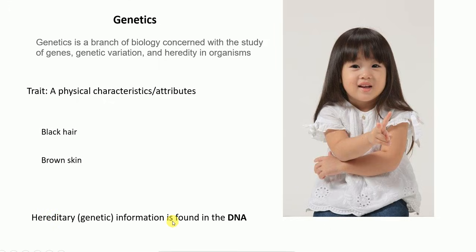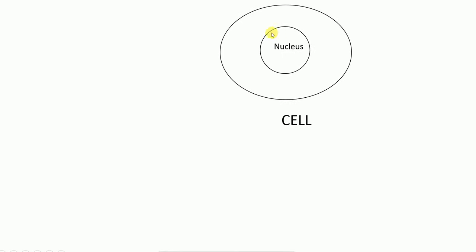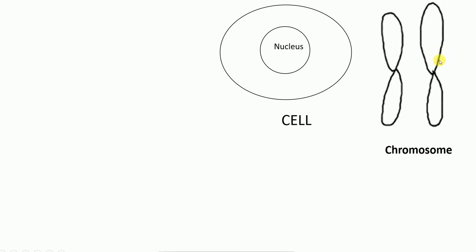Hereditary or genetic information is found in the DNA. Now have a look at this picture, which shows a schematic representation of the cell. A cell is the smallest structural and functional unit of an organism. In the center of the cell we have something called the nucleus.